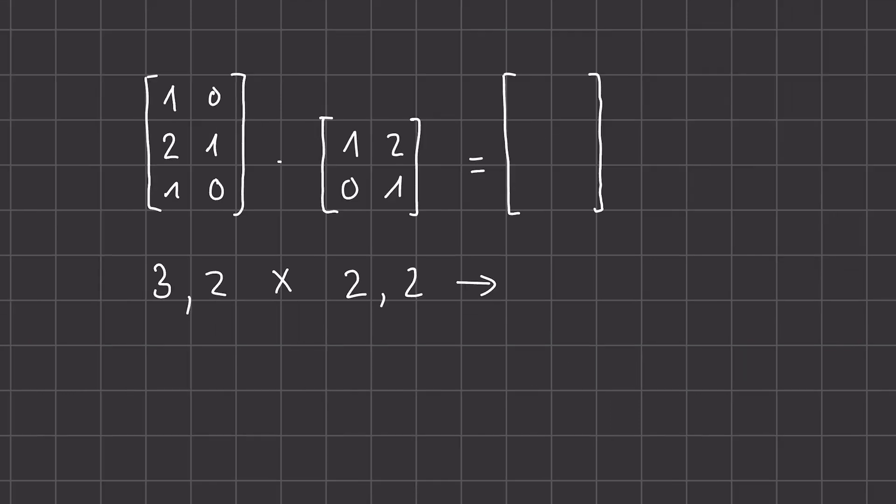Now our last operation is the matrix multiplication. This one is a bit more difficult. Here we have a matrix of size three times two and one of two times two. We have to check for compatibility. The number of columns of the first matrix needs to match the number of rows of the second matrix.